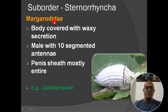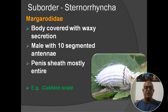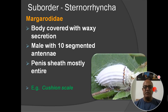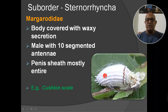Next family: Margarodidae. Body is covered with waxy secretion. Male has 10-segmented antennae. Penis sheath is mostly entire. The example is cushion scale — a cushion-like insect whose entire body appears velvet-like with small fiber-like structures, giving it the appearance of a cushion, hence the name cushion scale.